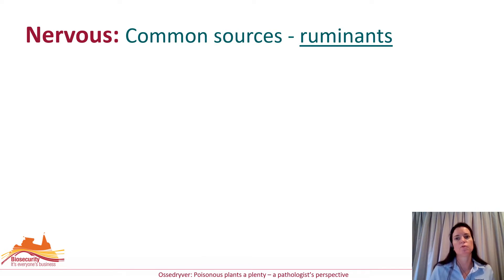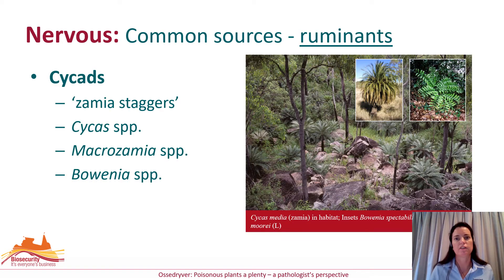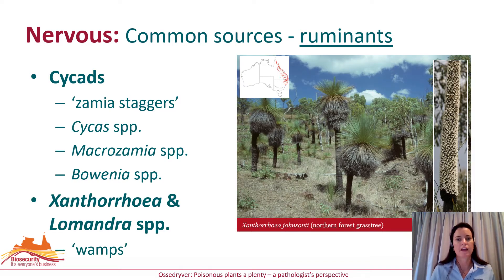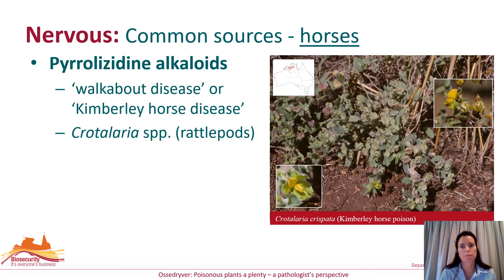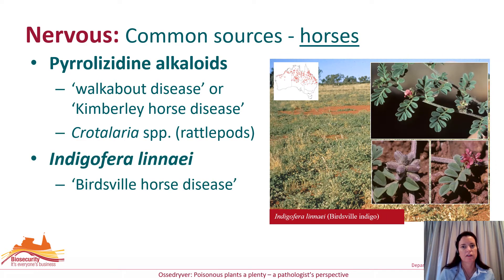The plants likely to cause nervous signs in ruminants in the northern half of Australia include cycads belonging to the Cycas, Macrozamia and Bowenia genera, which are responsible for the syndrome commonly referred to as zamia staggers, and Xanthorrhoea and Lomandra plant species, the cause of the syndrome referred to as wamps. While for horses, poisonings are associated with plants containing pyrrolizidine alkaloids, in particular the Crotillarias, which produce a syndrome referred to as walkabout disease or Kimberley horse disease, and Indigofera, the cause of Birdsville horse disease.